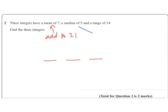The median of 5 means that the middle number's got to be 5 when they're in order, so that's easy, I can put that straight there. And the range of 14 means that the biggest minus littlest equals 14.